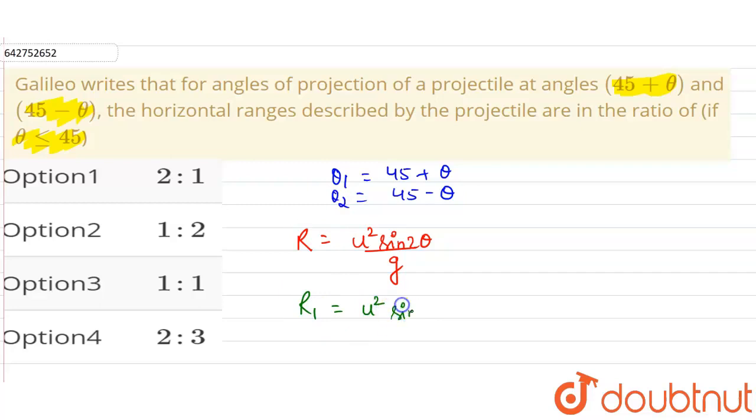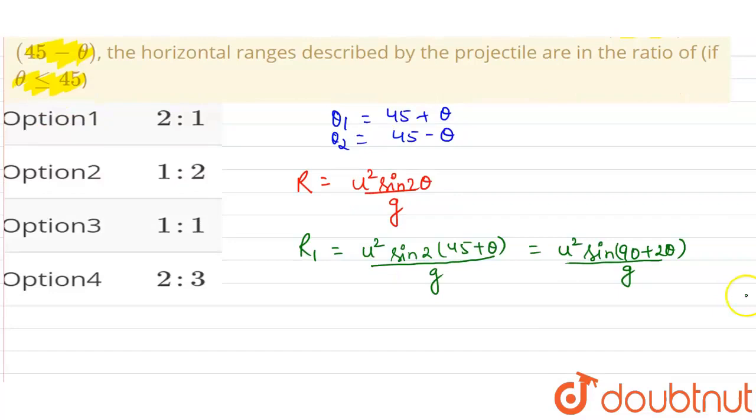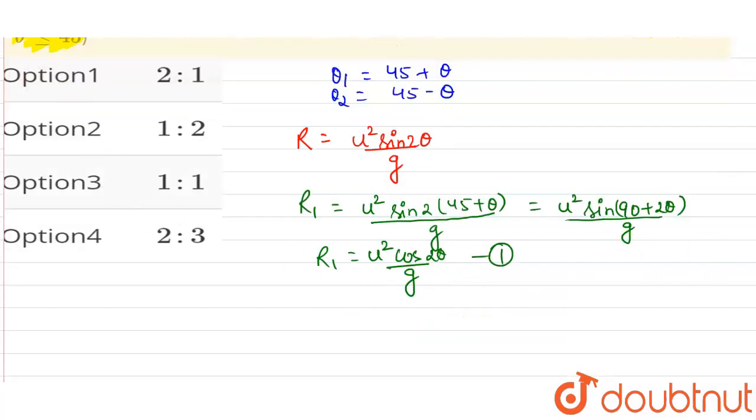u² sin(2 × (45° + θ)) / g, so this will be u² sin(90° + 2θ) / g. And sin(90° + θ) is cos(θ), so it will be R₁ = u² cos(2θ) / g. Let us suppose this is equation number 1.